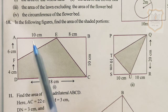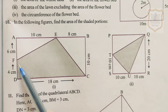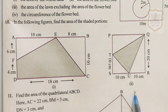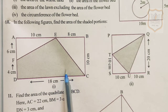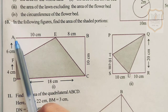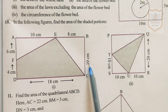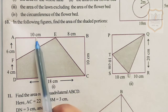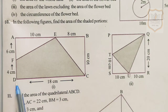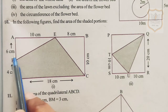Question number 10: find the area of the shaded portion. Two figures are given; figure 1 I will solve and figure 2 you have to do by yourself. In figure 1, a rectangle ABCDE is given whose length is 18 cm and breadth is 10 cm. Where AE is 10 cm, EB is 8 cm, BC is 10 cm, DC is 18 cm, FD is 4 cm and AF is 6 cm.